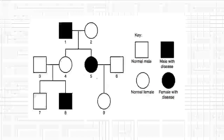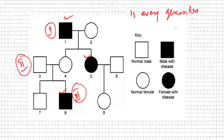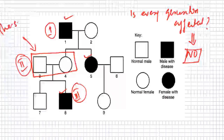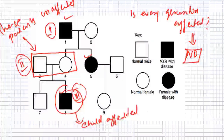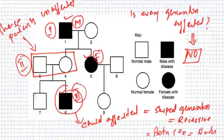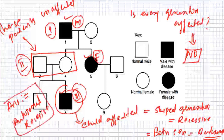Example two: first generation affected, second generation affected, third generation affected — but wait, these parents are not affected, yet they are having a child who is affected. So the parental generation is skipped — there is a skipped generation — which means it is a recessive character. Males and females are equally affected, so the answer is autosomal recessive.